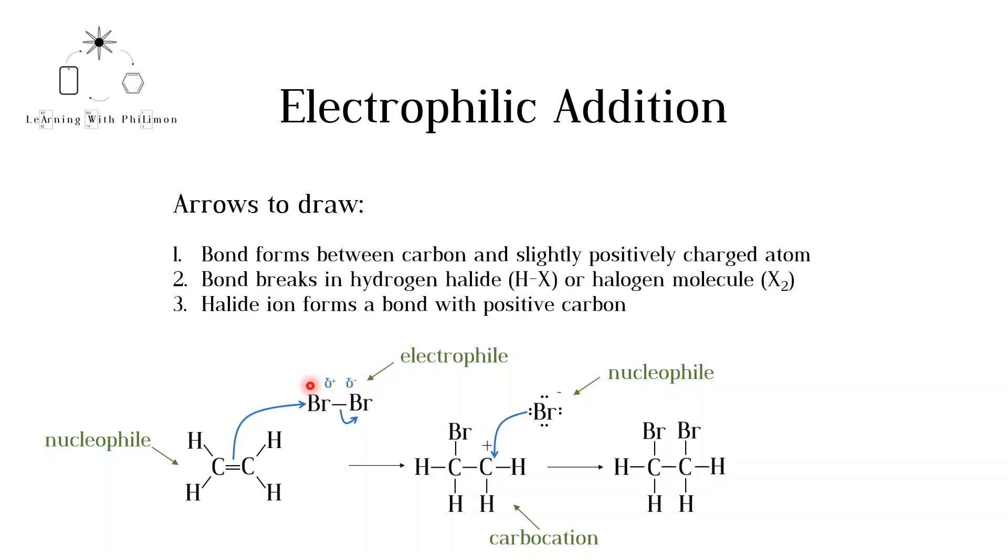The first arrow starts at the double bond and ends up at the slightly positively charged atom. This shows the bond forming between the carbon and in this case bromine. Note that the mechanism is called electrophilic because the double bond is attracted to an electrophile. The second arrow starts at the bond between the halogen atoms and ends up on the slightly negatively charged bromine atom. This shows the breaking of the bond.